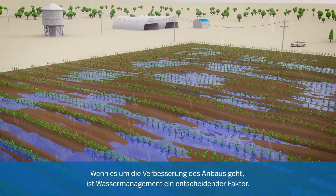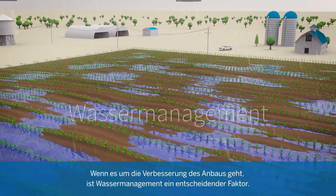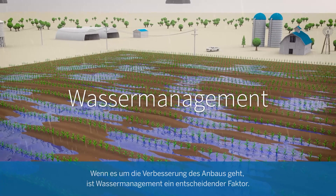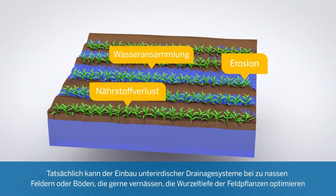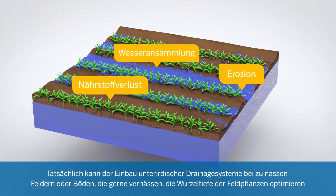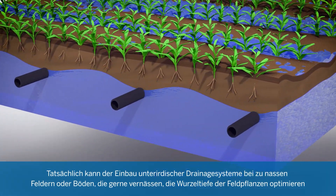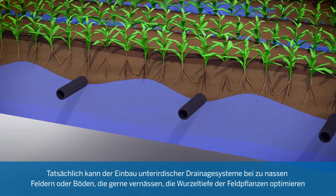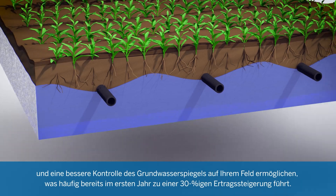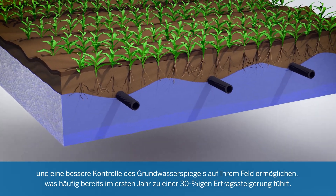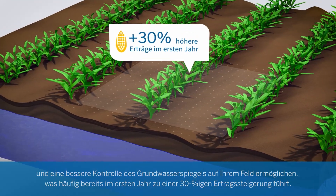When it comes to improving farming operations, few things are as critical as water management. In fact, for fields with too much water or soils that strongly retain moisture, installing subsurface drainage systems can optimize crop root depth and provide better control of your field's water table, often increasing yield by more than 30% in the first year.